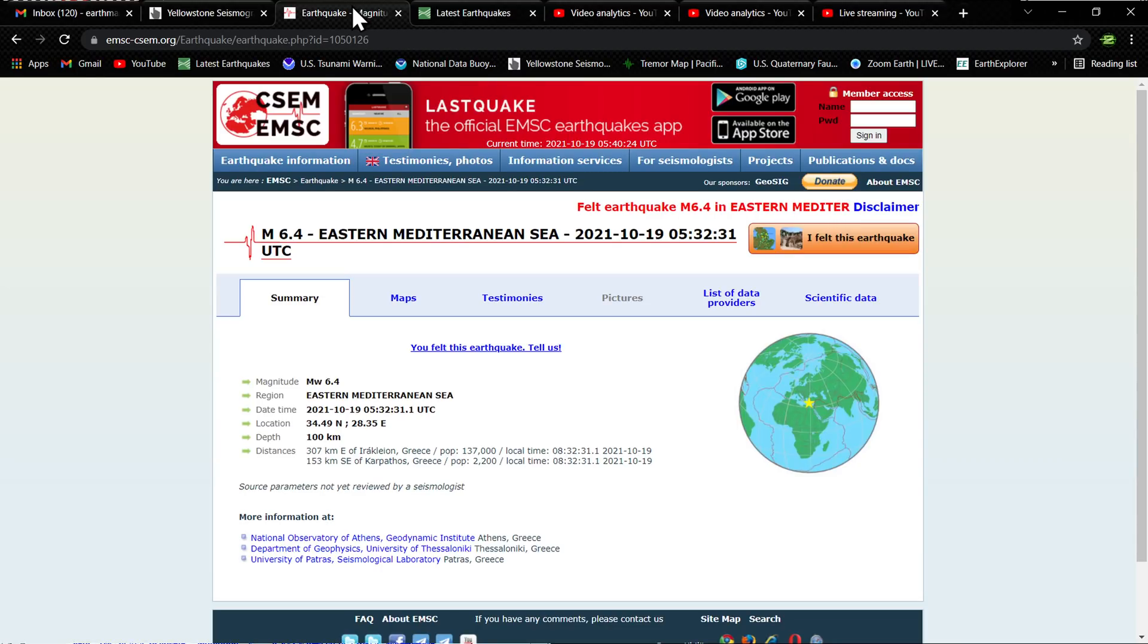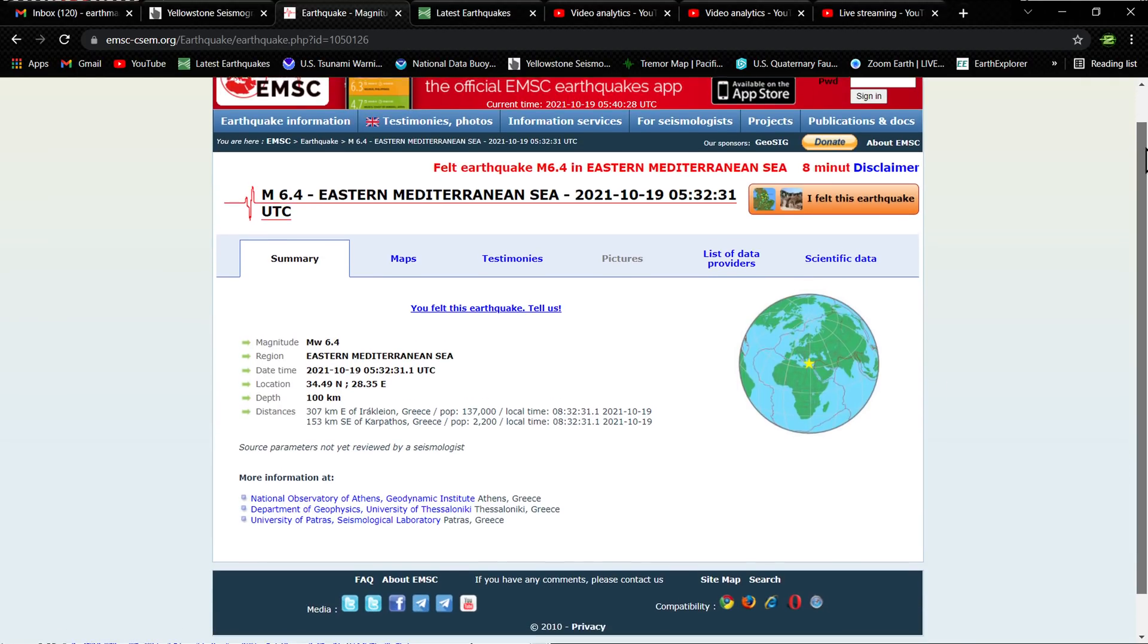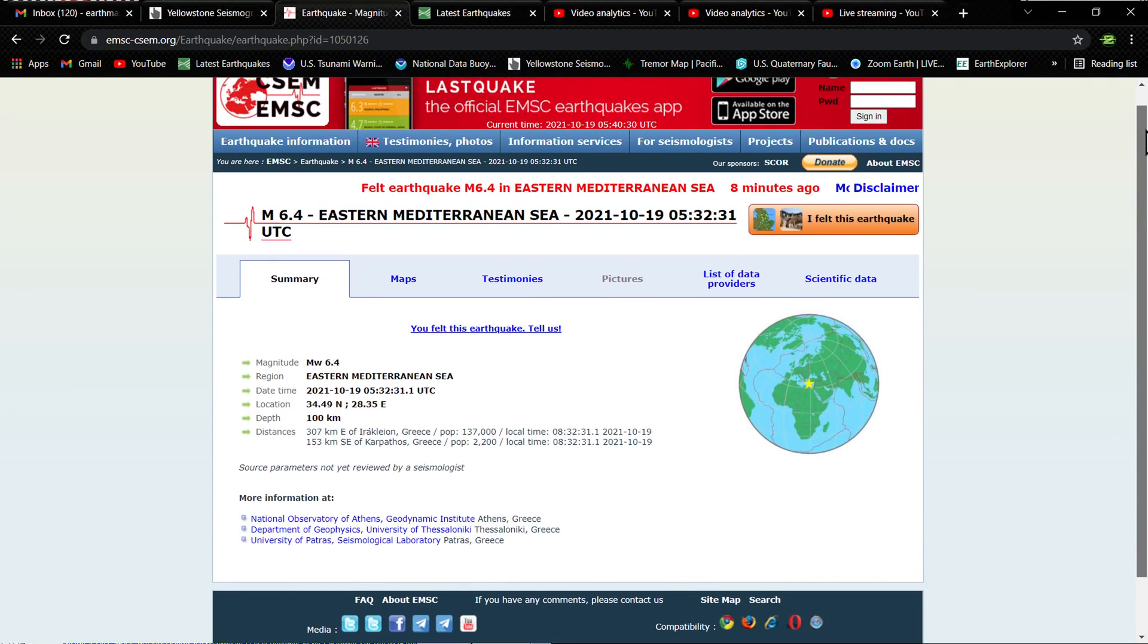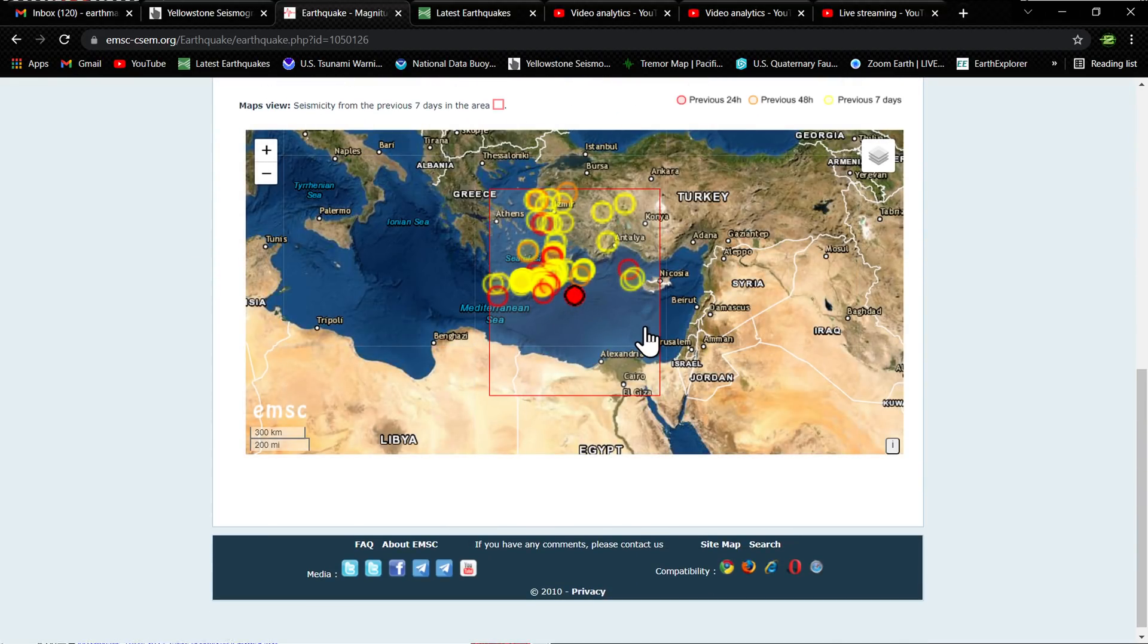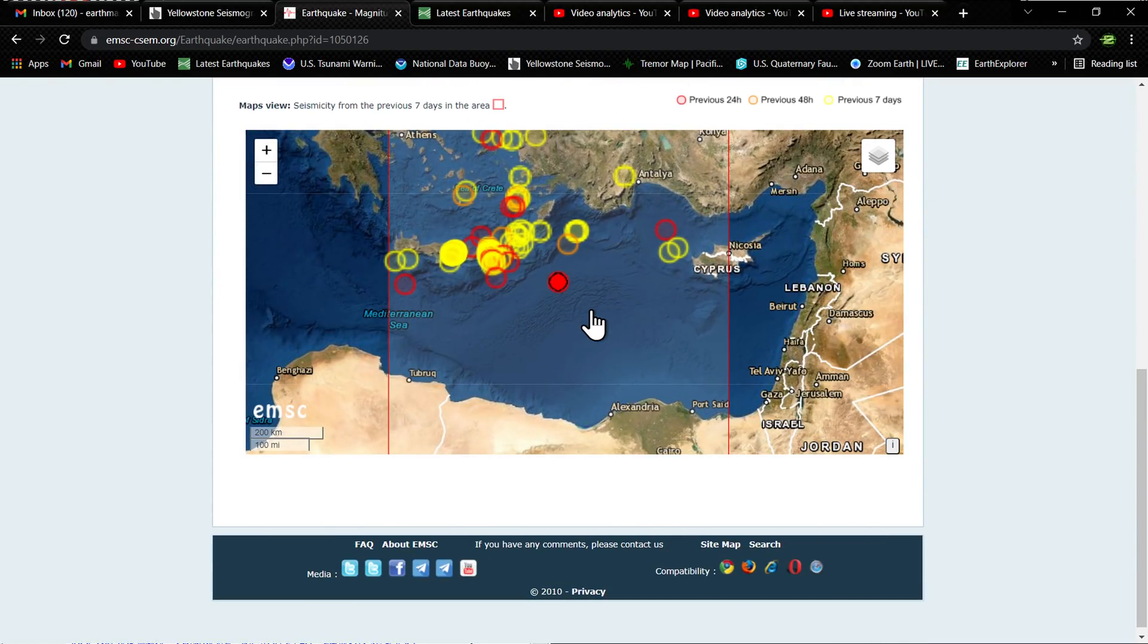So it's possible this thing could get upgraded, downgraded, who knows what. It's been bouncing all over the place at the moment, but it is out there in the Eastern Mediterranean Sea region. And the interactive map here, I'll show you guys exactly where this is at. Looks like in the Mediterranean Sea, you can see that red circle flashing or blinking. That's the earthquake in question right there.